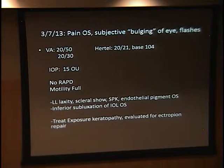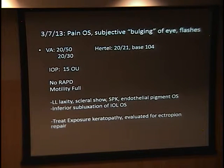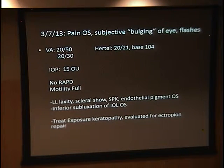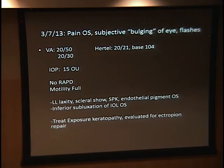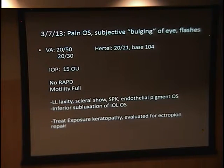About three years after surgery, he came to clinic with left eye pain, subjective bulging of the eye, and flashes in his vision. Vision was 20/50 in the right eye and 20/30 in the left. There was no significant proptosis, IOP was normal at 15 in both eyes, with normal pupils and motility. He had some lower lid laxity, scleral show, and dry eye symptoms. We found endothelial pigment deposits on the left endothelium and inferior subluxation of his left lens.